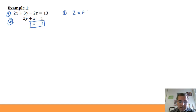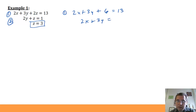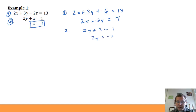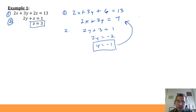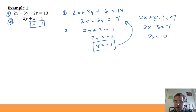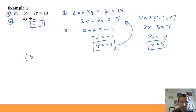Equation one becomes 2x plus 3y plus 6 equals 13, which means 2x plus 3y equals 7. Equation two becomes 2y plus 3 equals 1, which has only y, so we can quickly solve to get y equals negative one. We now have two variables, so we plug y equals negative one into our new equation one: 2x minus 3 equals 7, so 2x equals 10, and x equals 5.